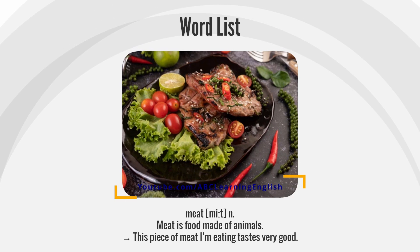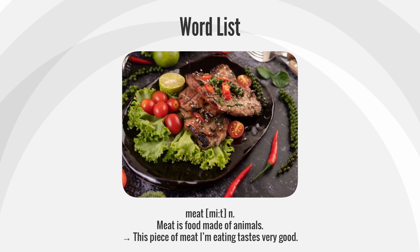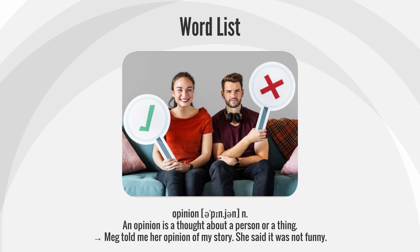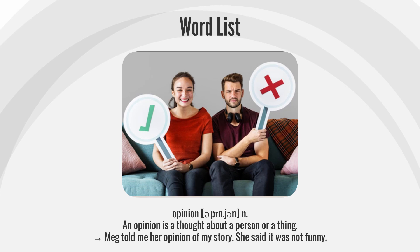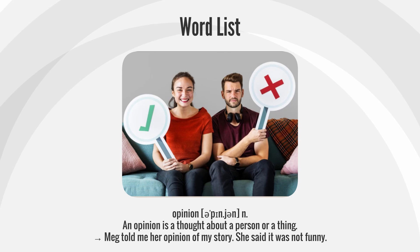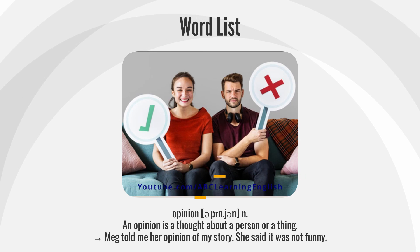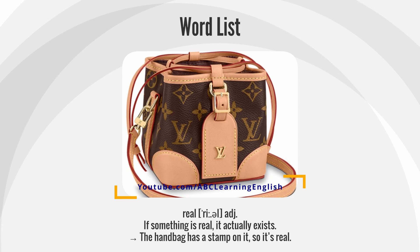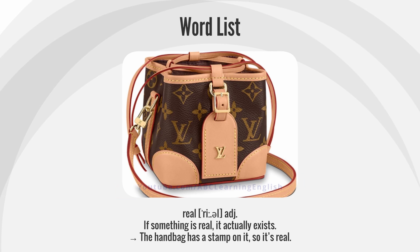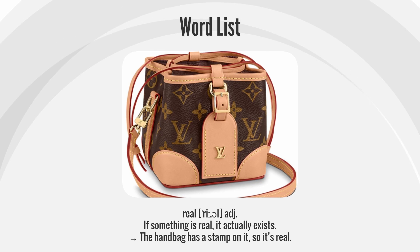Meat: Meat is food made of animals. This piece of meat I'm eating tastes very good. Opinion: An opinion is a thought about a person or a thing. Meg told me her opinion of my story. She said it was not funny. Real: If something is real, it actually exists. The handbag has a stamp on it, so it's real.